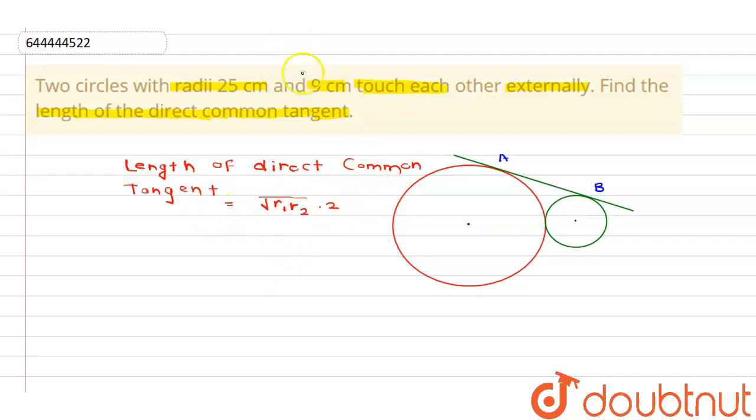From the question we can conclude that r1 is equal to 25 and r2 is equal to 9. Just substitute the value of r1 and r2.